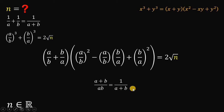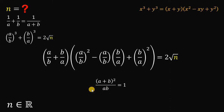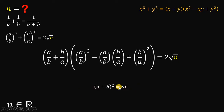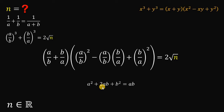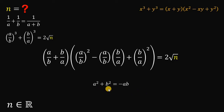After multiplying through, we expand (a plus b) quantity squared to get a squared plus 2ab plus b squared. Then combining similar terms by subtracting 2ab from both sides gives us a squared plus b squared equals negative ab.